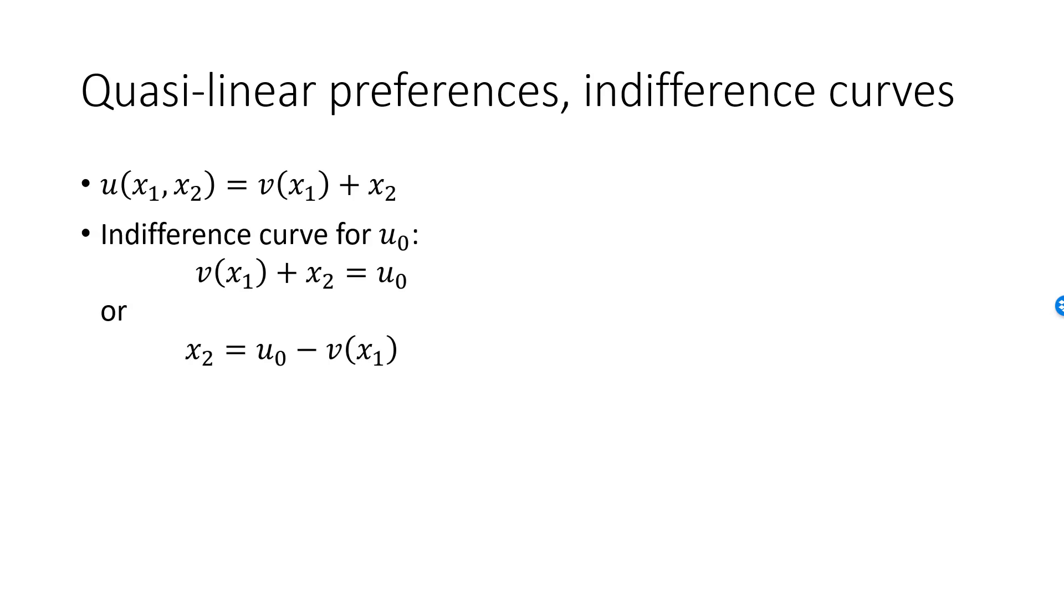An indifference curve is a level curve for the utility function. So, let's look at the indifference curve giving us some arbitrary utility $u_0$. The implicit relationship $v(x_1) + x_2 = u_0$ can easily be made explicit, and this is really why quasi-linear utility functions are so nice to work with. We have $x_2 = u_0 - v(x_1)$. From this we can see that all indifference curves are vertical translates.